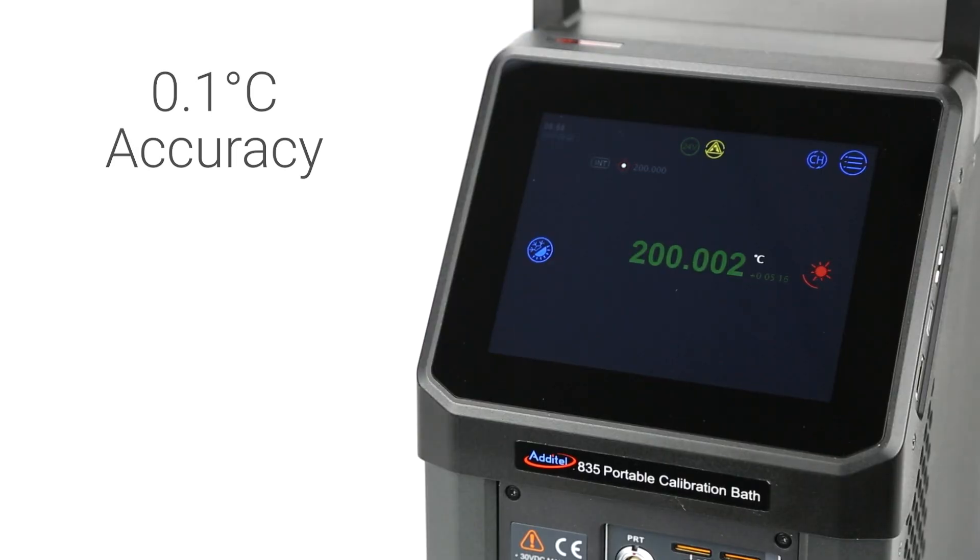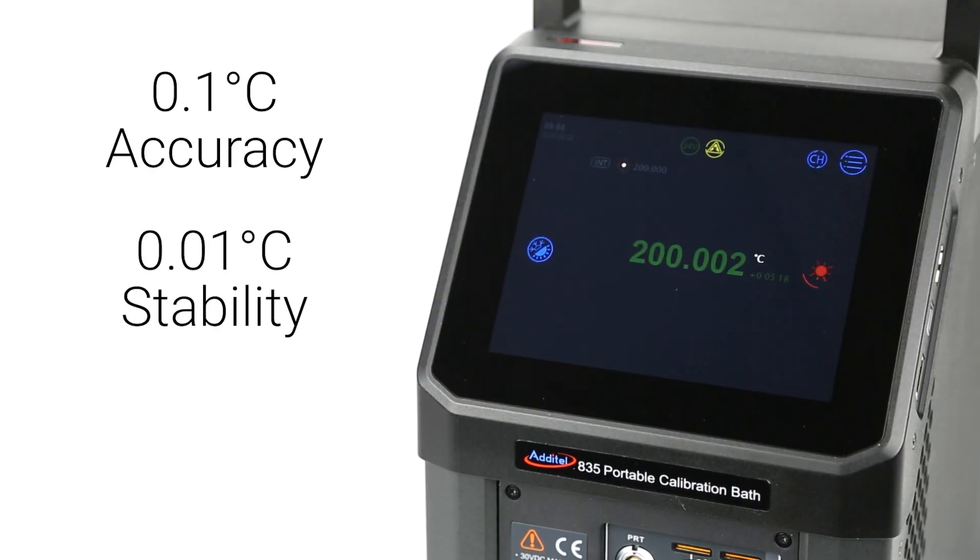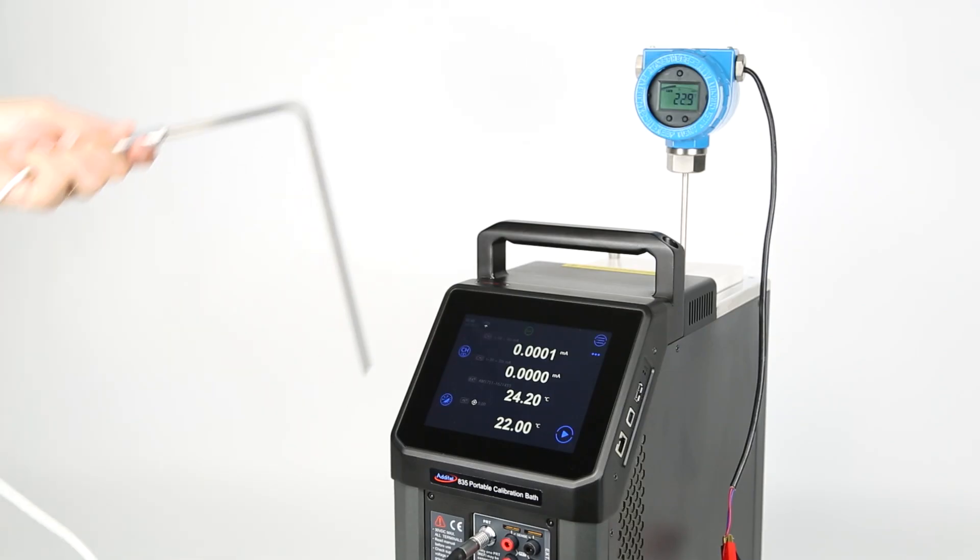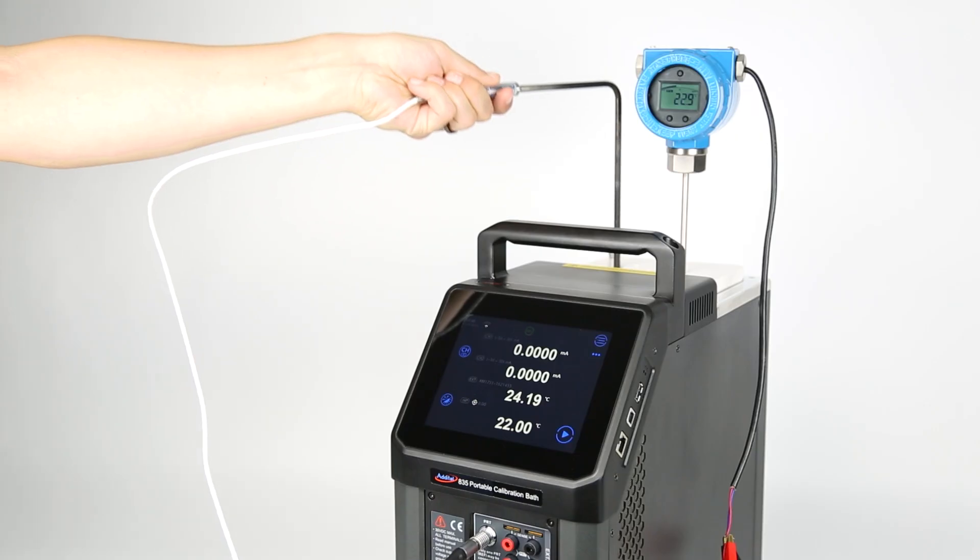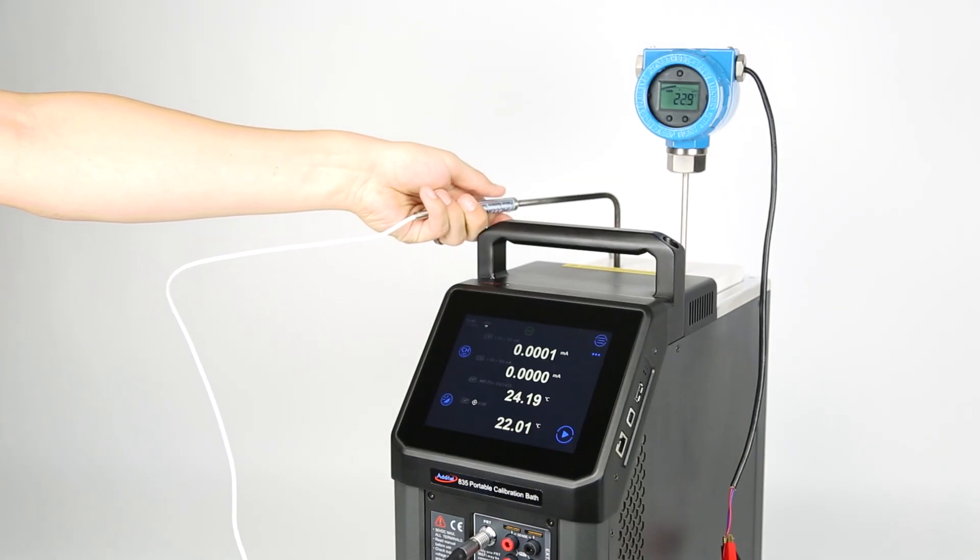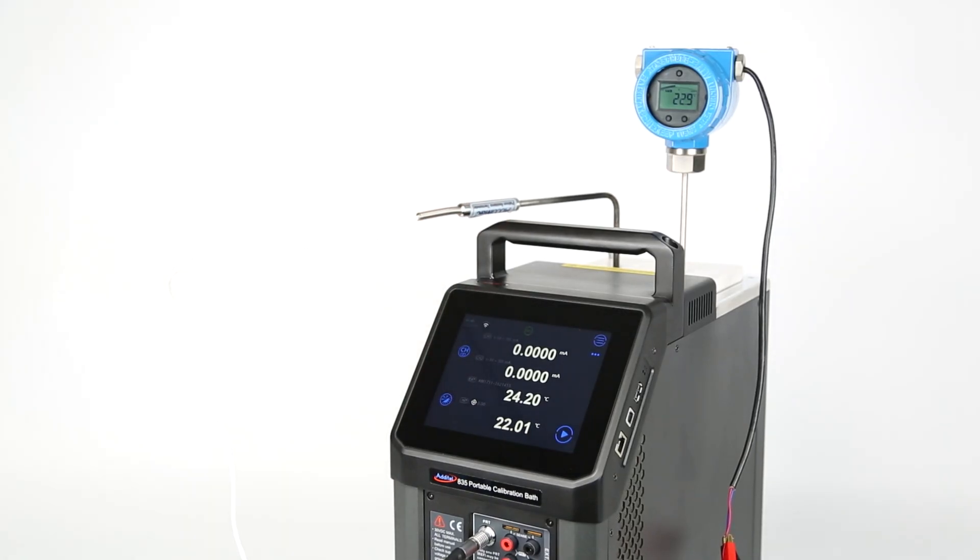With a display accuracy of 0.1 degrees, a stability of 0.01 degrees, and a uniformity of 0.02 degrees, the 835 generates a uniform temperature field to ensure repeatable and reliable results across a wide range of sensor types and sizes.